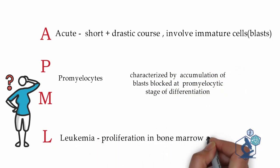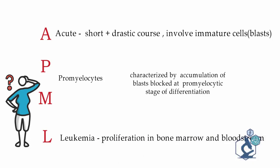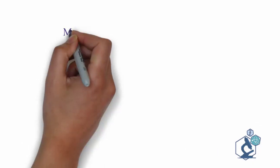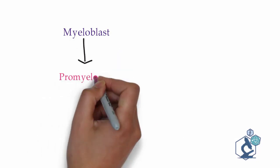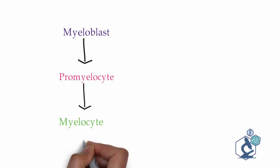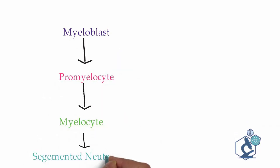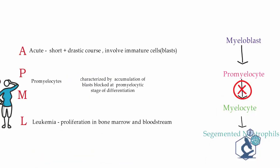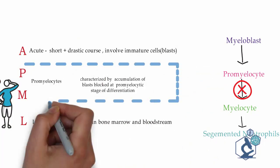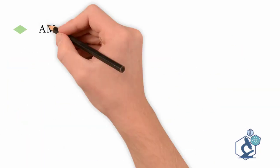A brief overview of myelopoiesis: it begins with the myeloblast, progresses to promyelocyte, then myelocyte, finally forming a segmented neutrophil. In APML, there is a block at the promyelocyte-to-myelocyte stage, leading to uncontrolled proliferation — that is, leukemia.